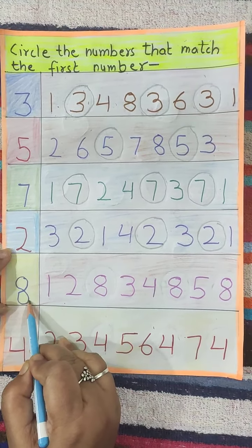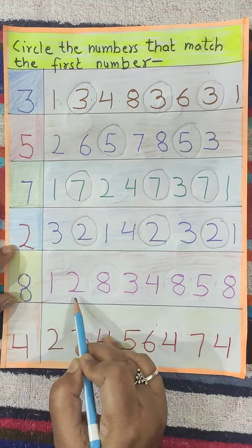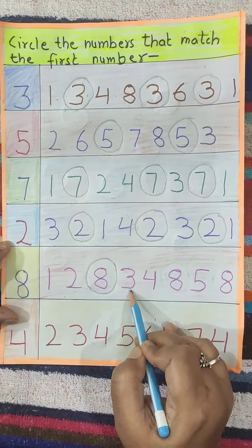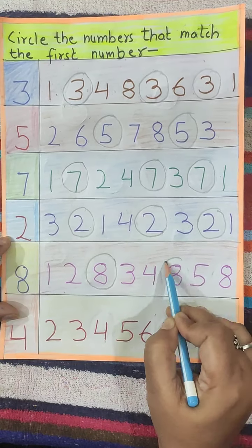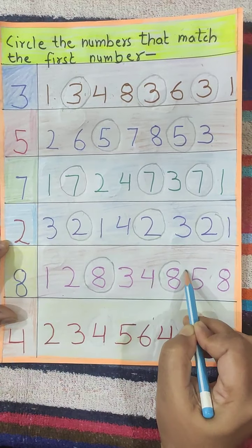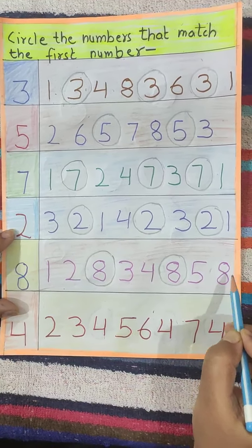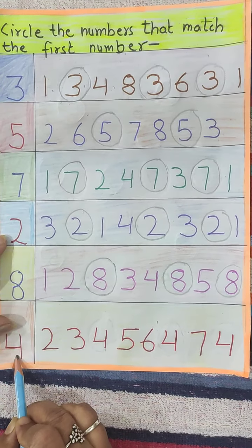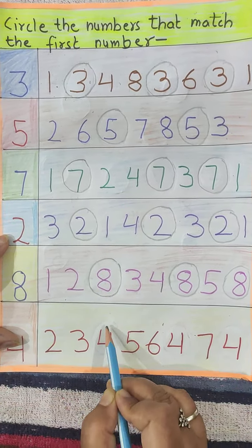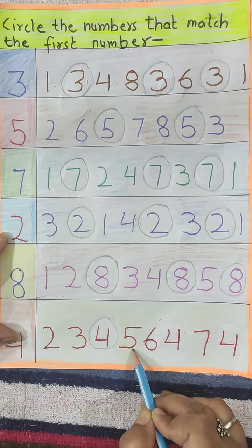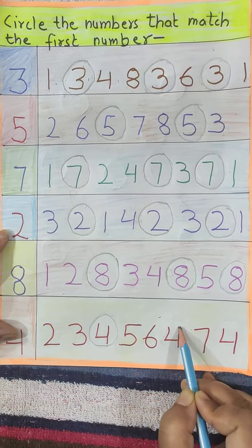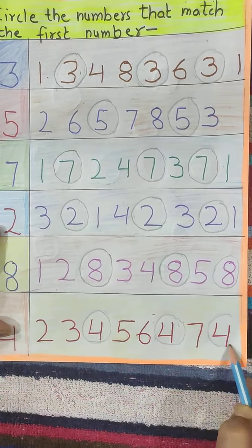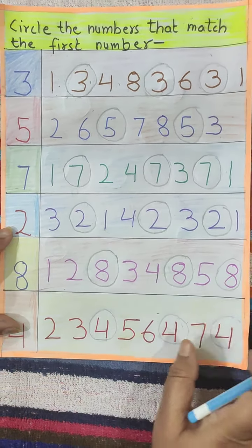Now 8 is written here: 1, 2, 8 — we will circle it. Then 3, 4, 8 — we will circle 8. Then 5, 8 — we will circle 8. Now 4 is written here: 2, 3, 4; then 5, 6, 4; then 7, 4. Like this you have to do this worksheet.